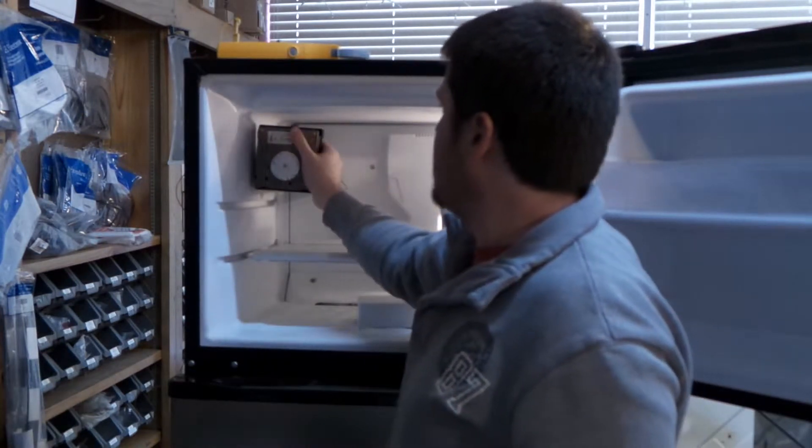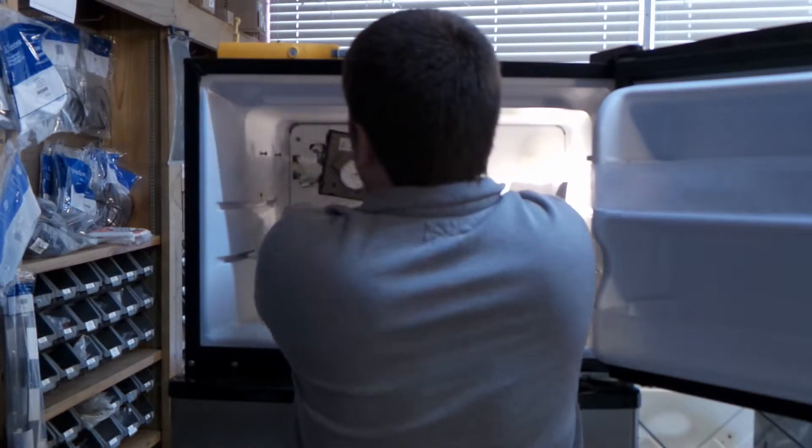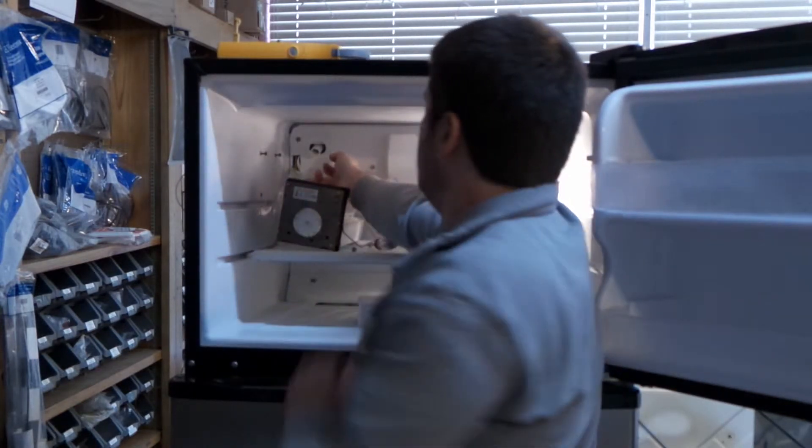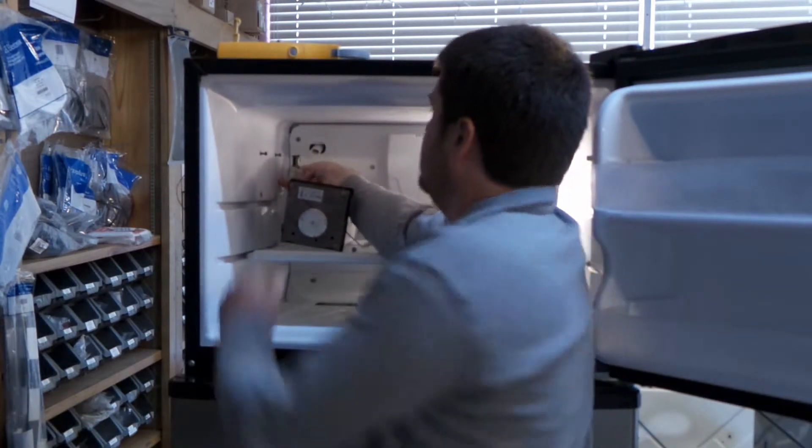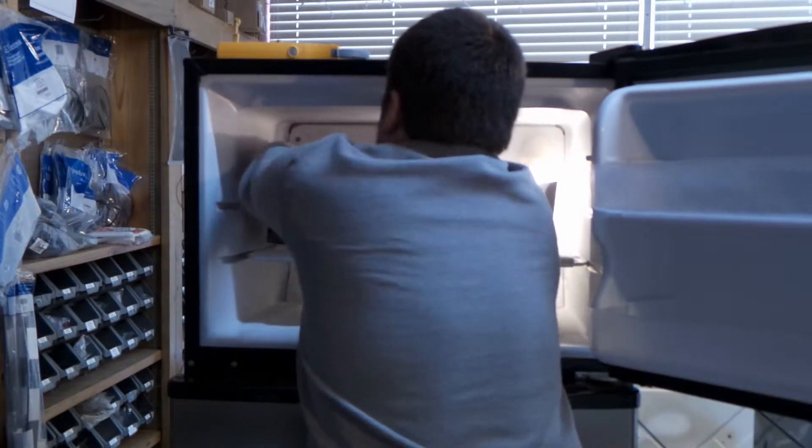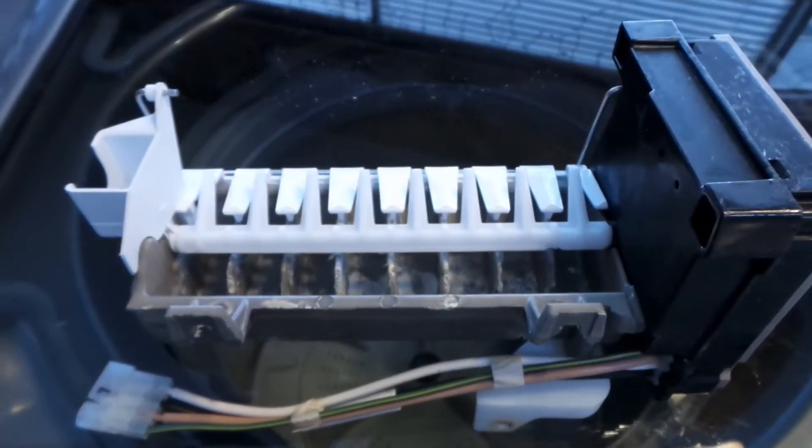You just kind of pick up the ice maker and lift it out of those screws. Here in the back you'll see a wire harness, it's got a little clip on it, so you're going to pull that clip back and just pull that harness apart like that, and that's it.